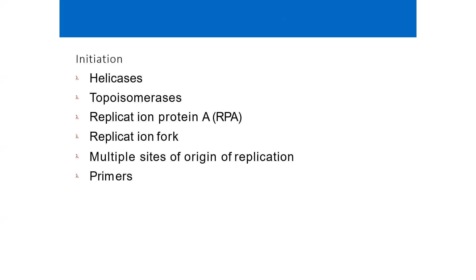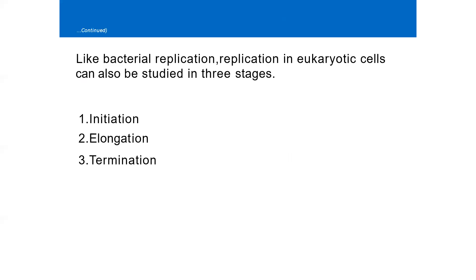In contrast to bacterial cells where there is only a single site, in eukaryotic cells there occur multiple sites of origin of replication. The enzyme primase, which is an RNA polymerase, associates with DNA polymerase alpha. This complex synthesizes short strands of primers containing both RNA and DNA. Once these primers are formed, the primase–DNA polymerase alpha complex dissociates from the DNA.